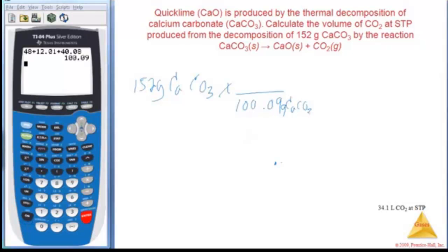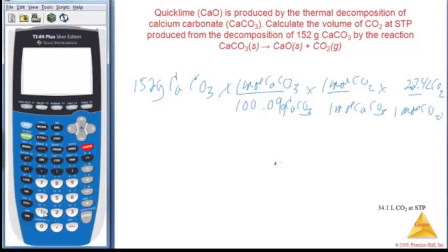Okay, grams of calcium carbonate is one mole of calcium carbonate. And I need one mole of calcium carbonate to get one mole of CO2. And one mole of CO2 is 22.4 liters of CO2. So I'm just going to do a plug and a chug. So it's 152 times 22.4 equals divide by 100.09.